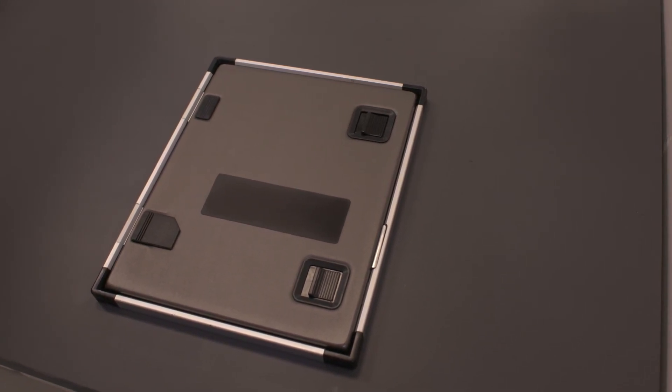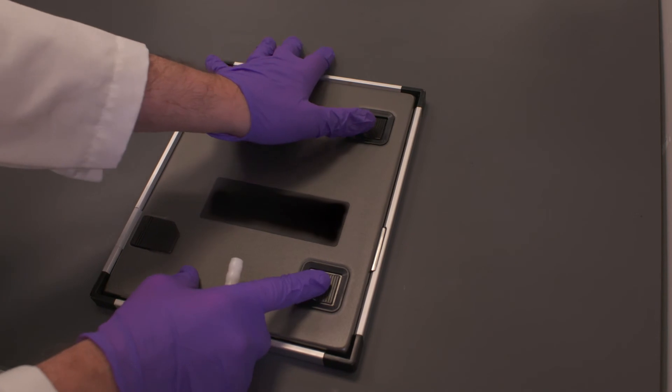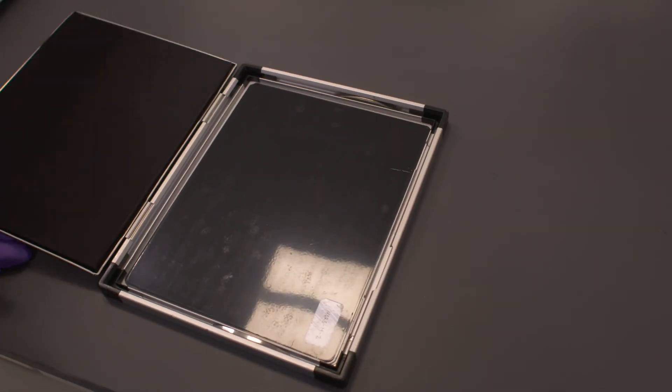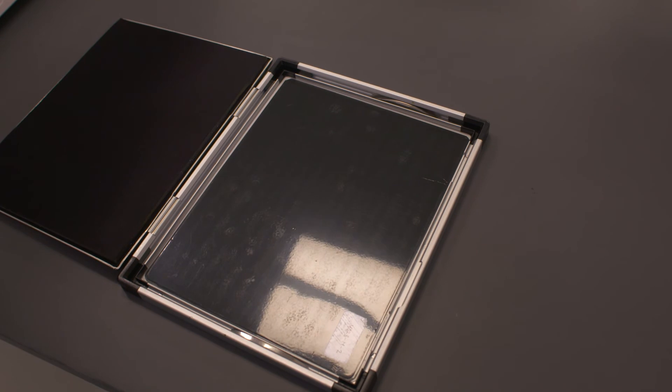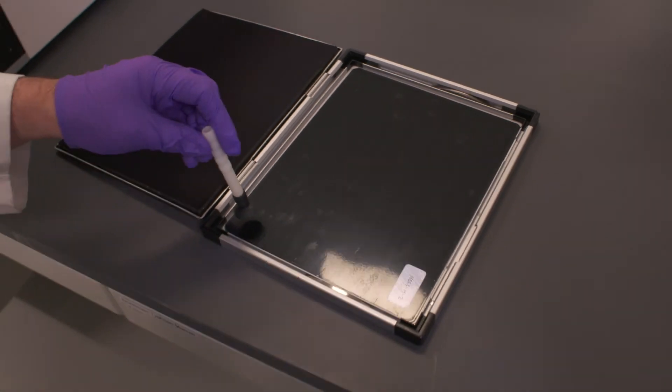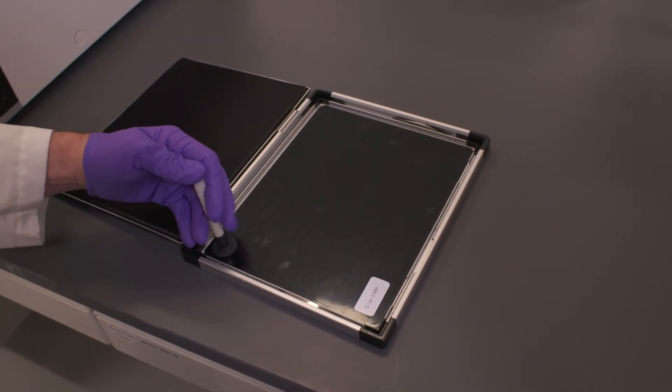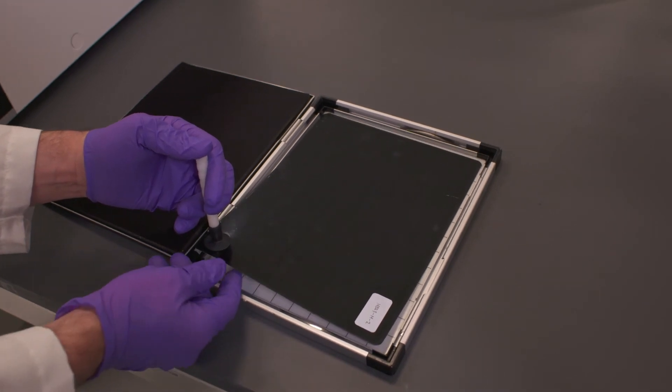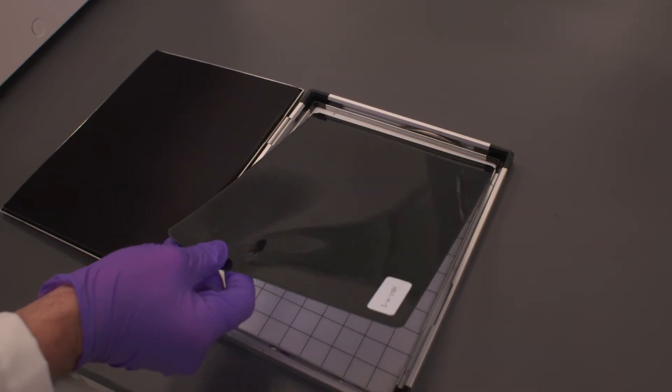After that set amount of time, we would open up the exposure cassette again. Then we're going to take this device, which is a suction cup plunger. We'll place that on the corner of the screen. That will allow us to easily pull the screen out while we're still in the hot lab.